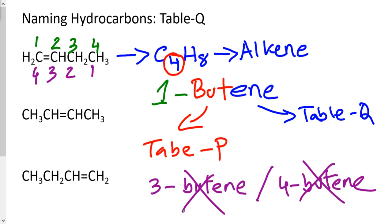In this case, counting from left to right gave 1-butene, while counting from right to left gave 3-butene. We always pick the lowest possible number, so 1-butene is correct. Always count from both sides to understand where the location of the double or triple unsaturated bond is. We'll do more practice questions so the concept becomes clearer.